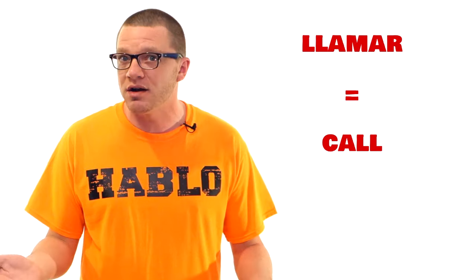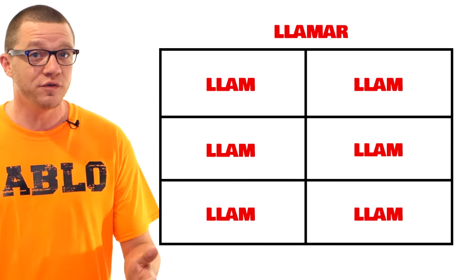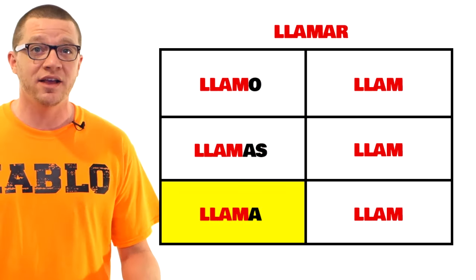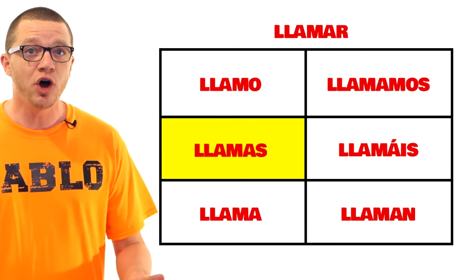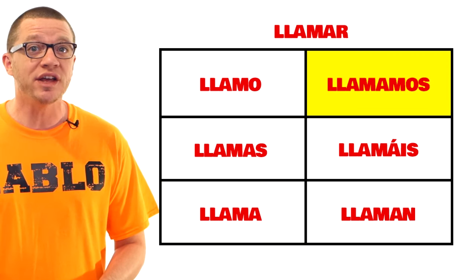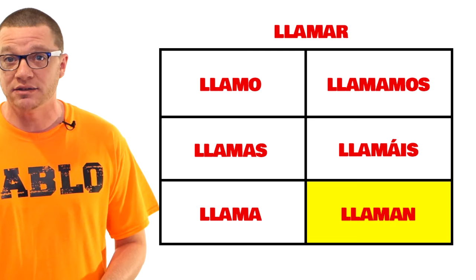Now remember, all regular AR verbs have the same endings. So once you can conjugate hablar, you can conjugate llamar, which means 'to call.' Remove the AR from each box, then add the appropriate endings: -o here, -as here, -a here, then -amos, -áis, and -an. So: llamo is 'I call,' llamas is 'you call,' llama is 'it calls,' llamamos is 'we call,' llamáis is 'you both call,' and llaman is 'they call.' Llaman!